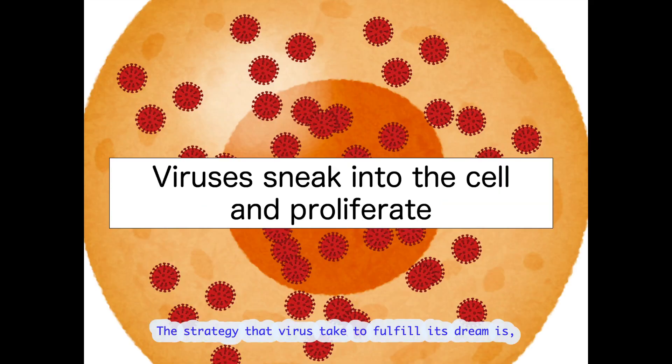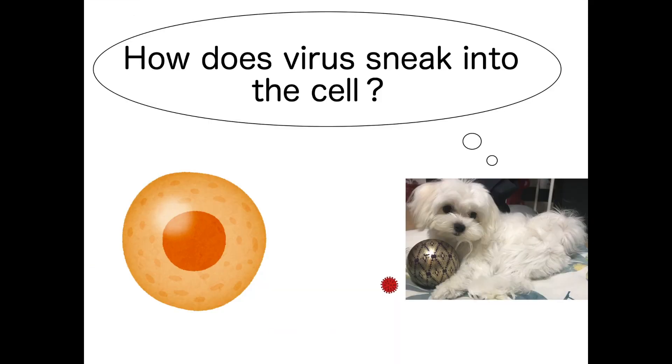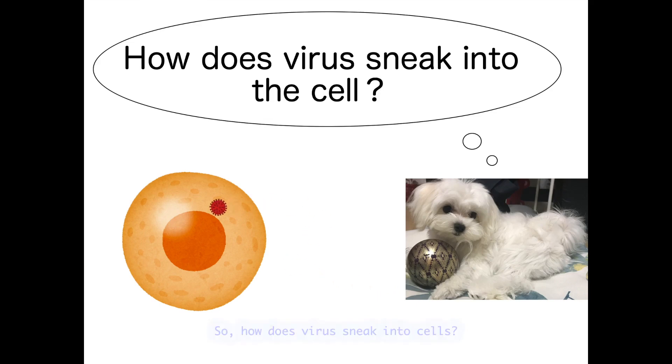The strategy that virus takes to fulfill its dream is to sneak into the cell and make use of the cell's factory. So, how does virus sneak into cells?